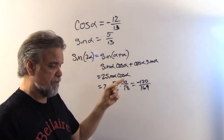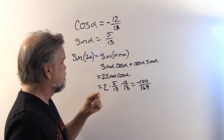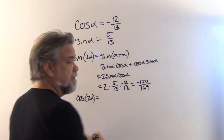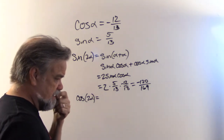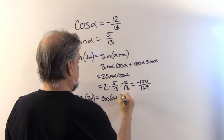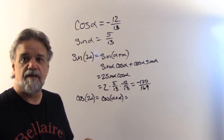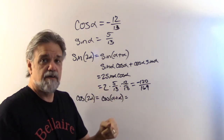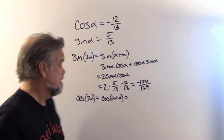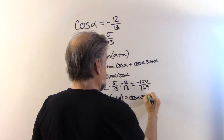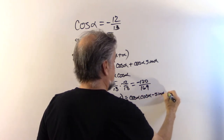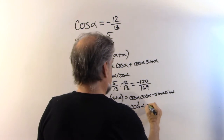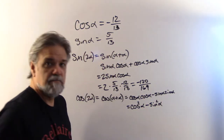We were ending up in quadrant four, so a negative sine actually makes sense. What about the cosine? The cosine of 2α is going to be the cosine of α + α. Cosine of α + β is cosine α cosine β minus sine α sine β. In this case β is α, so this is cosine α cosine α minus sine α sine α.